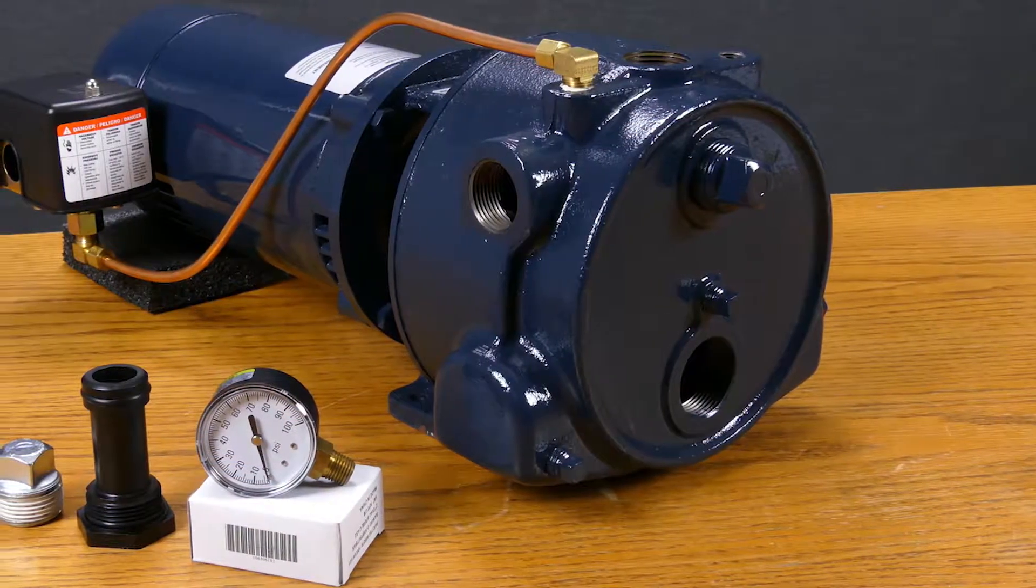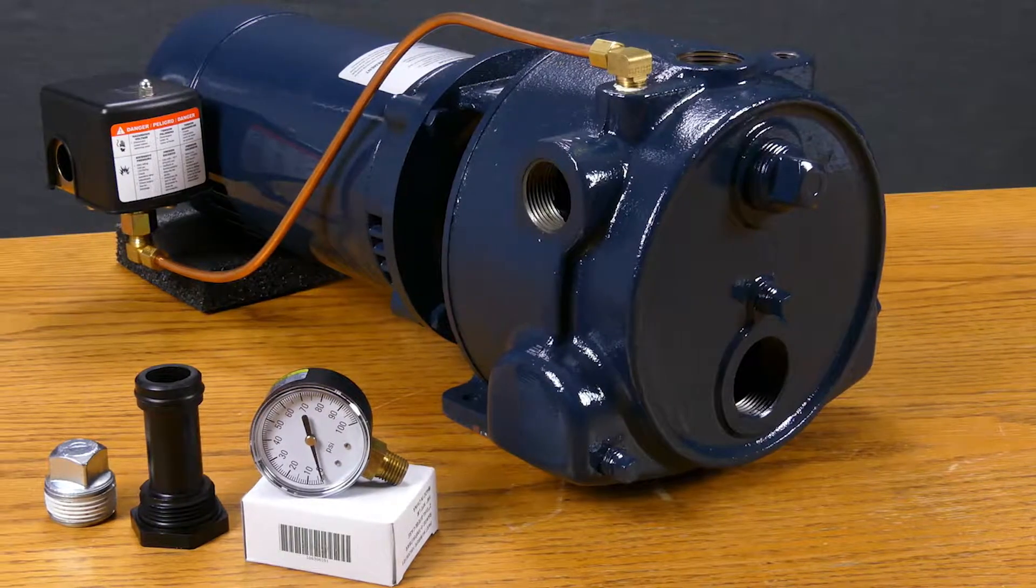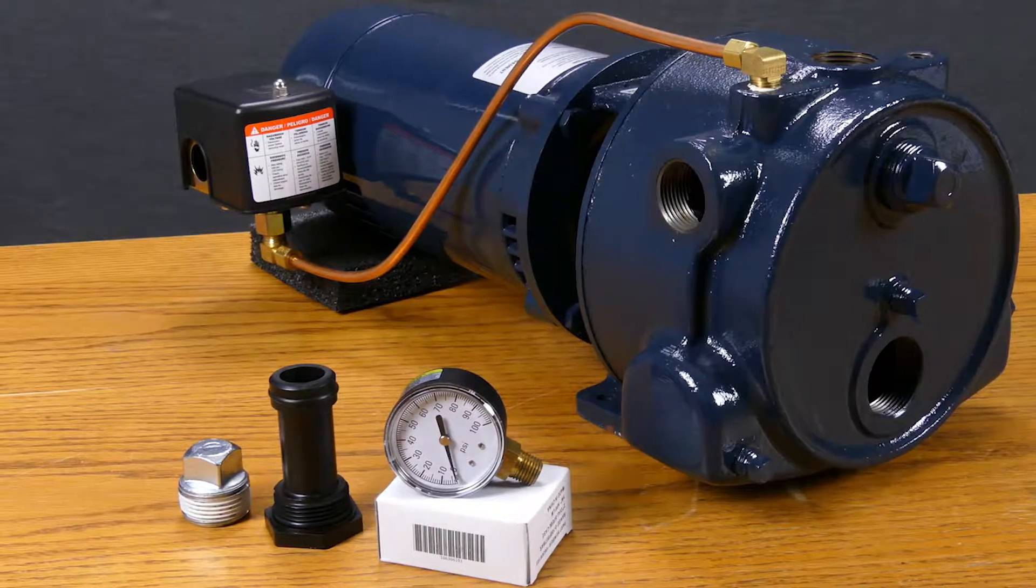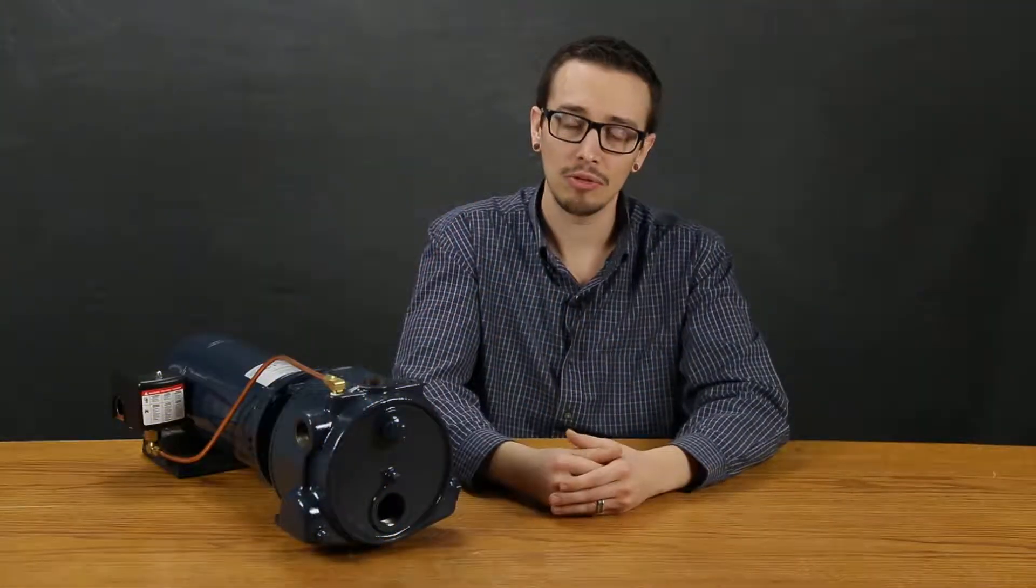Typical applications for the RM2 jet pump is residential well applications, both shallow and deep well, lake pumping for irrigation and or supply of water to the home or cistern.